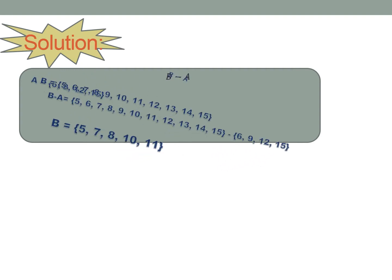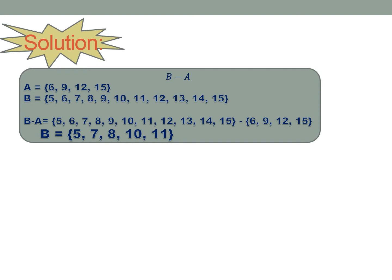So we have here another solution. B minus A: the elements of B are 5, 6, 7, 8, 9, 10, 11, 12, 13, 14, 15, and the elements of A are 6, 9, 12, 15. The common elements are 6, 9, 12, and 15. So therefore, B minus A is equal to 5, 7, 8, 10, 11, which are the remaining elements of B.